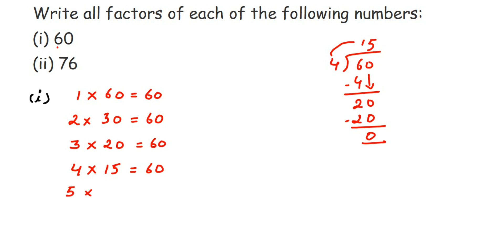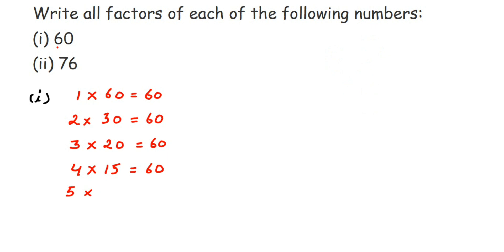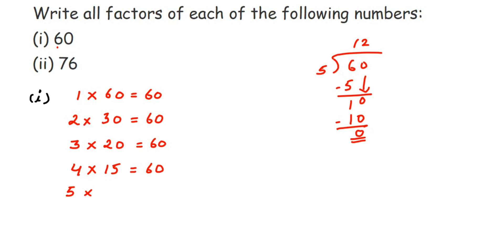For the 5 table: any number ending with 0 or 5 goes in the 5 table, so 60 qualifies. Dividing 60 by 5: 5 ones are 5, remainder 1, drop the 0 to get 10, 5 twos are 10, remainder 0. So 5 into 12 is equal to 60. We know 6 times 10 is 60, so that works too. For 7, it doesn't go — 7 table doesn't give us 60. Same for 8 and 9.